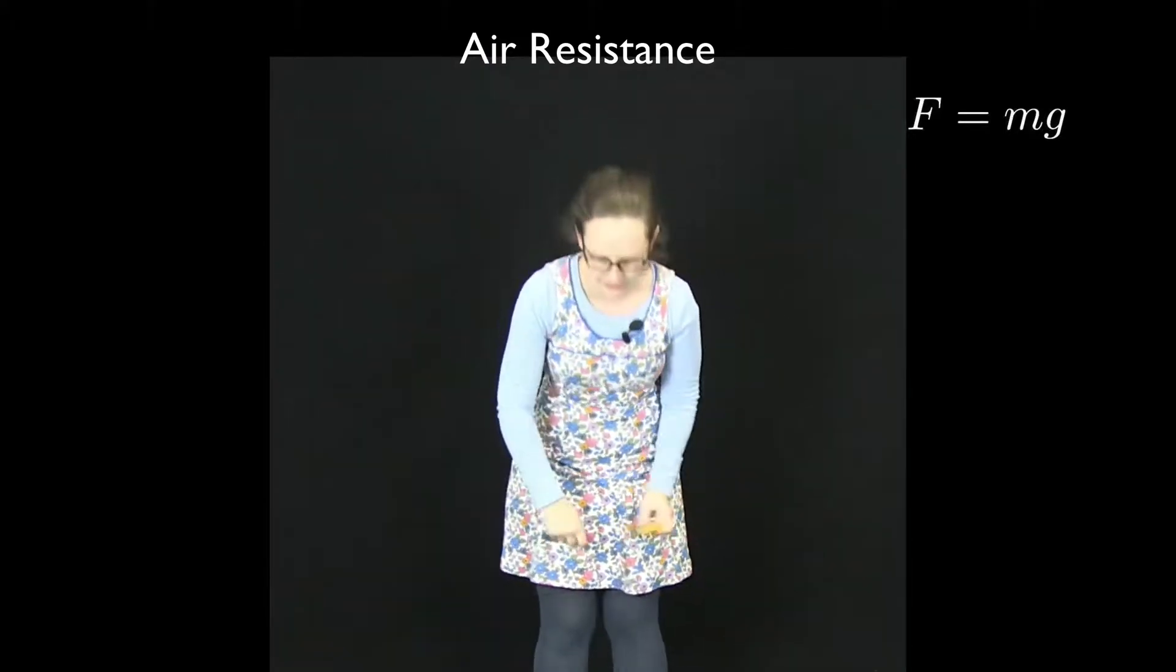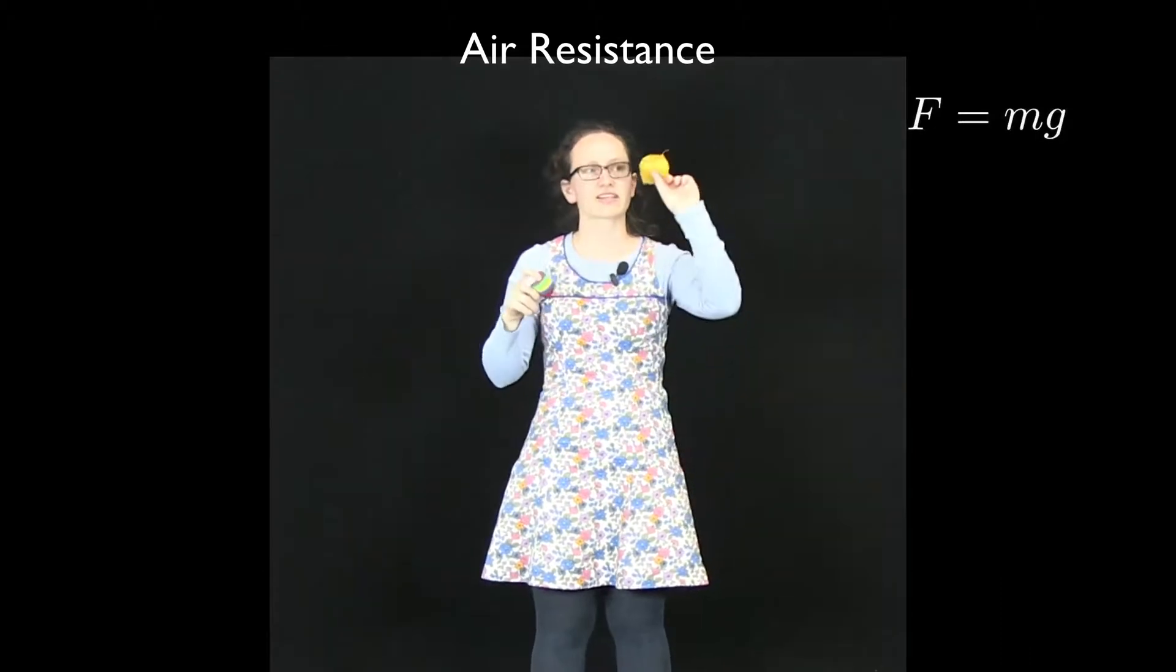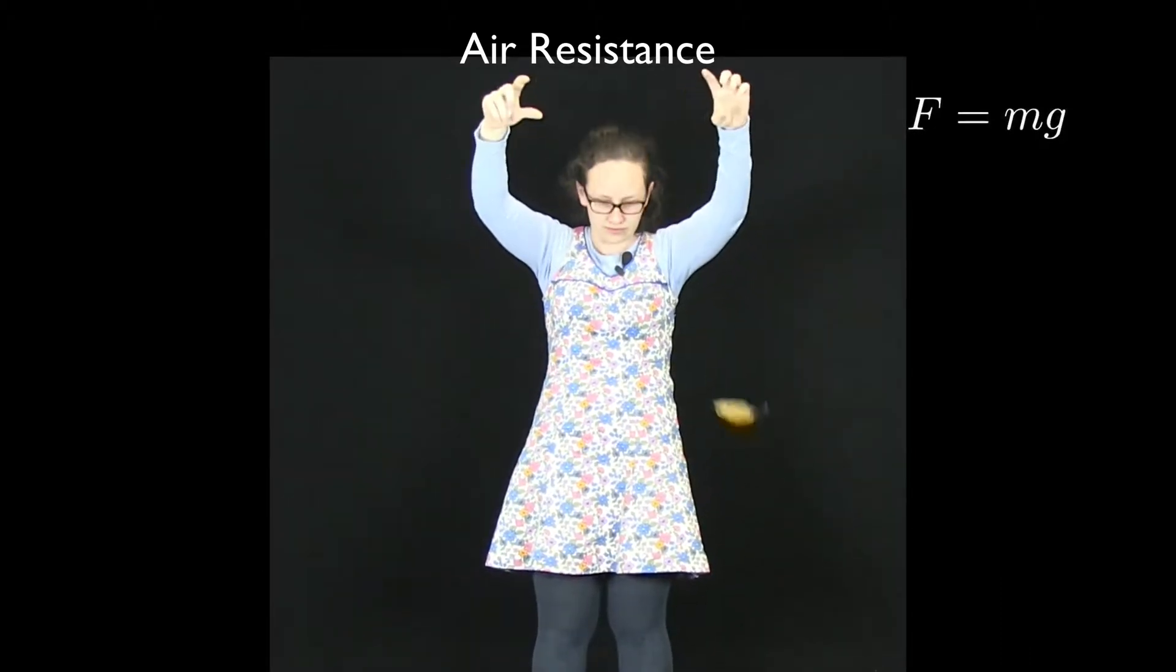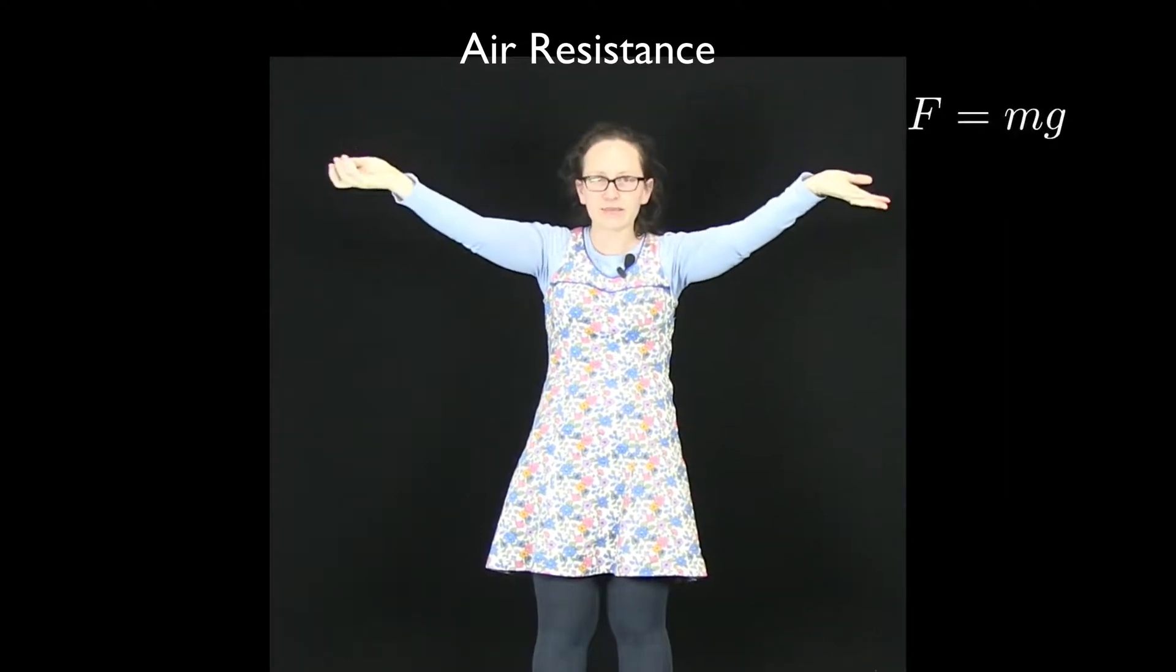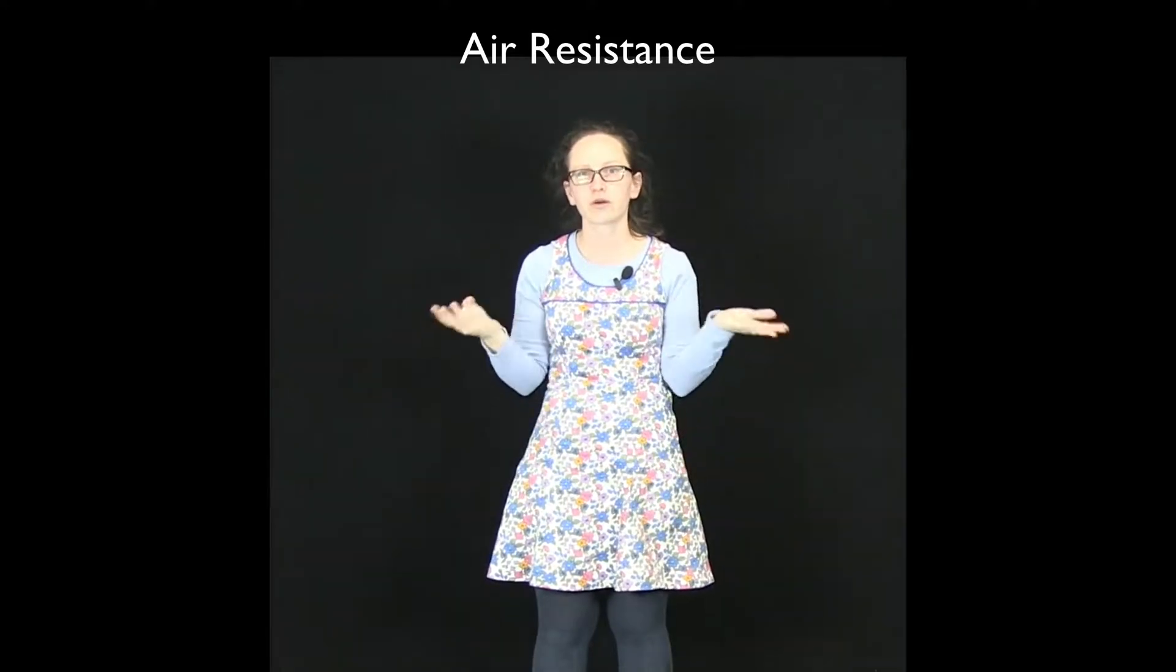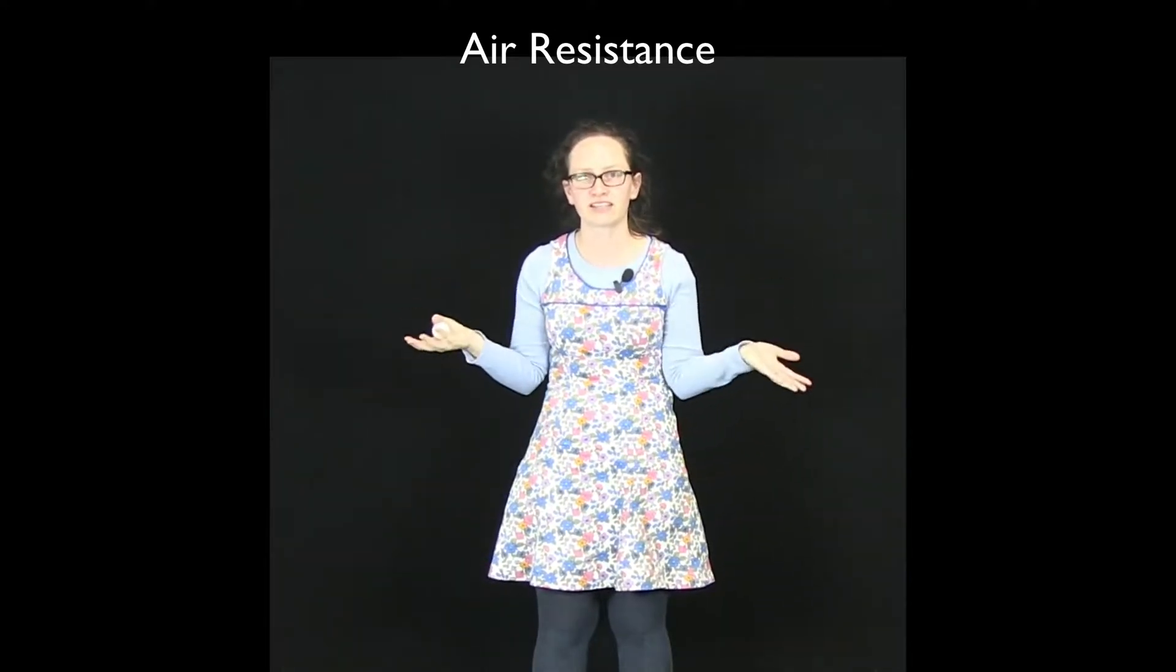But what happens when I drop a heavy object and something which is really light, like this leaf? You can see what I said before clearly isn't true. They're not hitting the floor at the same time. So what's going wrong with the physics in this case?